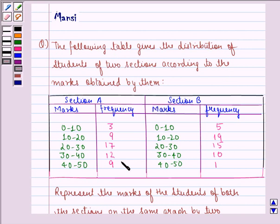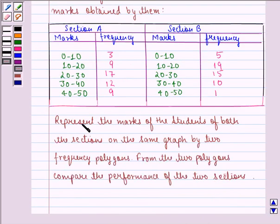So this is the data for section A and this is the data for section B. Now represent the marks of the students of both the sections on the same graph by two frequency polygons. From the two polygons compare the performance of the two sections.